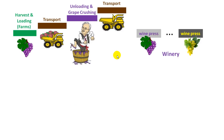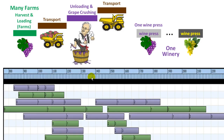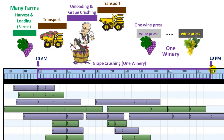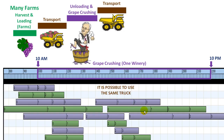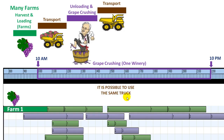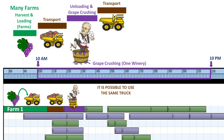The hypothesis is that normally the winery is composed of many wine presses. We are working with one winery, one wine press, and many farms. The winery opens at 10am and closes at 10pm. It is possible to use the same truck twice — one truck loads grapes at farm one, then transports to the winery, then unloading and grape crushing, and finally transport back to the farm.